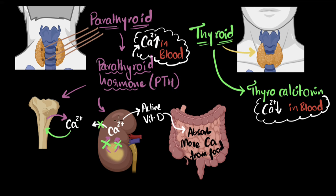Now it might be reasonable to think that calcitonin also stops the kidneys from releasing active vitamin D, but turns out life is not that simple — it doesn't just do everything opposite. I couldn't find any resource which talks about its effect on vitamin D, so we'll just leave it as it is. And this way, both of these hormones work together to regulate calcium levels.